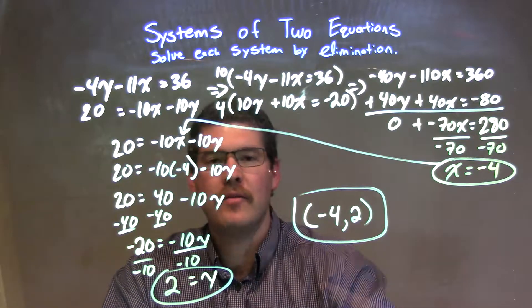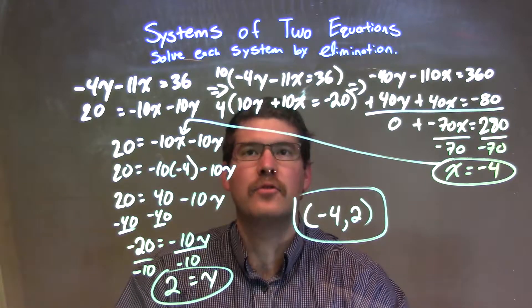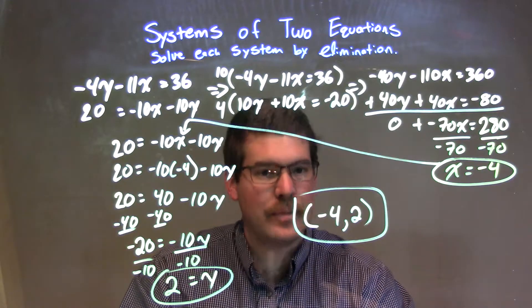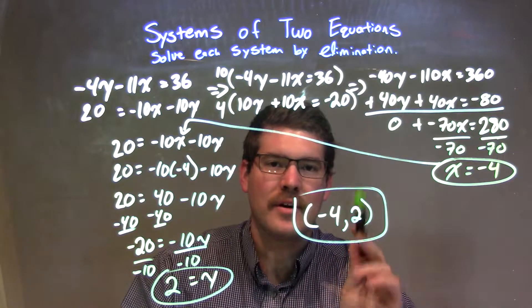Since now I had my x value and my y value, that's the coordinate point, that's the solution to the system of equations. By elimination, it gave us our final answer, which is negative 4 comma 2.